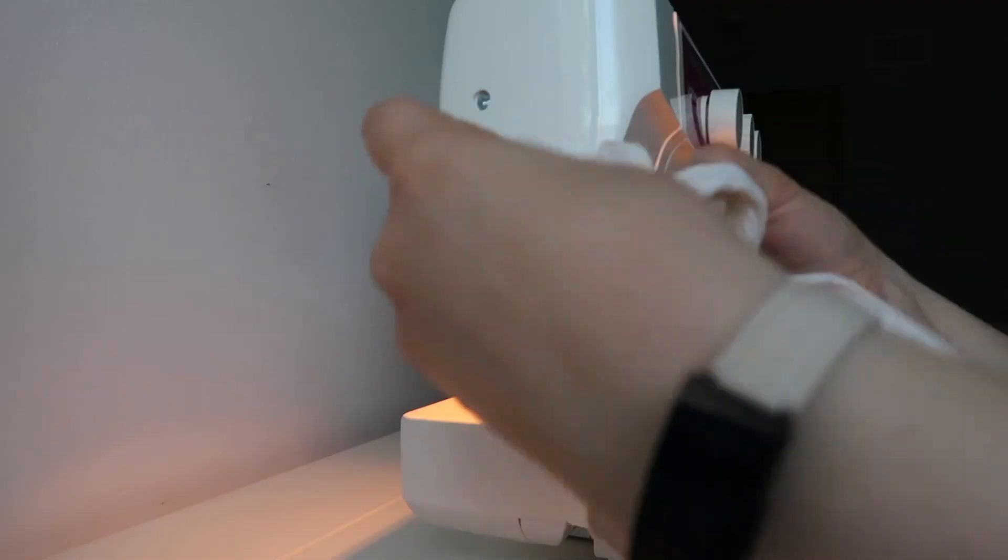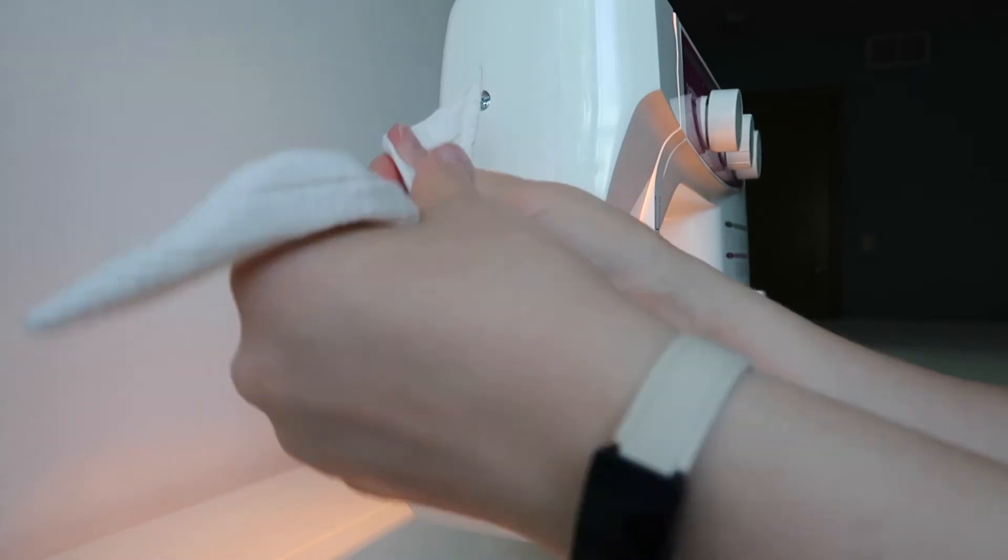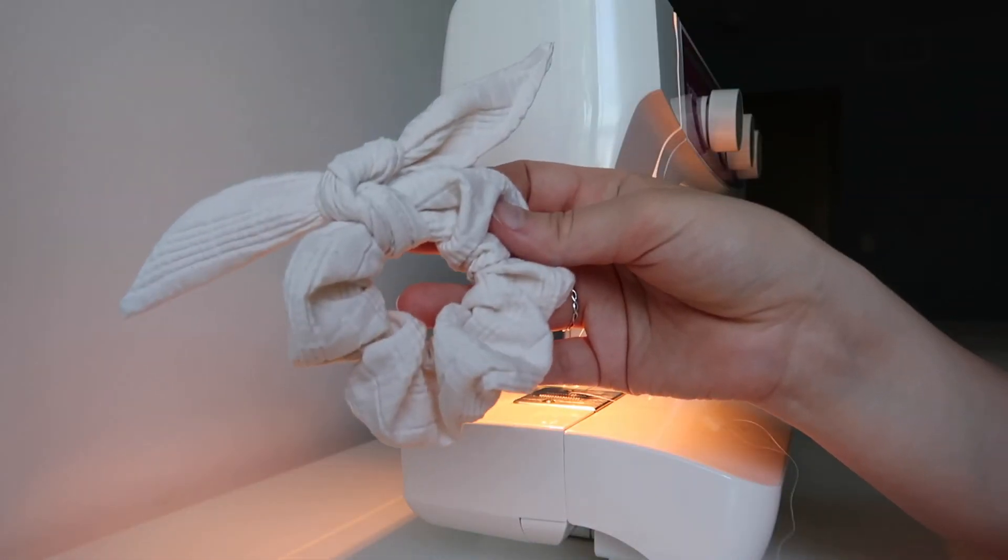So you can leave it as is or take your little bow piece and double knot it over the seam to give yourself a scrunchie with tails.